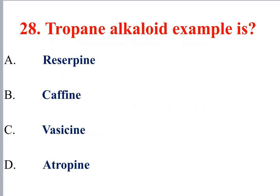Question 28: Which is an example of a tropane alkaloid? Tropane alkaloids include atropine. Other examples mentioned: vasicine (quinazoline), caffeine (purine), reserpine, and indole derivatives.